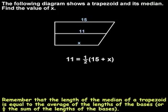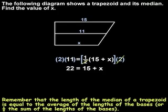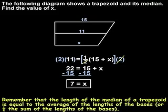To solve this equation for x, our first step is to get rid of the one-half on the right side by multiplying both sides of the equation by 2. That gives us 22 equals 15 plus x. Subtracting 15 from both sides, we find that 7 equals x.